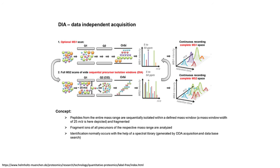In contrast, in the data-independent scan, the ions again go into the quadrupole, a full mass spectrum is analyzed, and then sequential precursor windows are isolated, and all of the ions that fall within that mass range are isolated, fragmented, and a mass spectrum combined. These mass windows tend to be on the order of 4 to 25 m/z units, so you get a combined picture of everything that's present. Nothing is lost, there's no limit on the number, but the linkage between the parent ion mass and the fragment ion mass is lost.